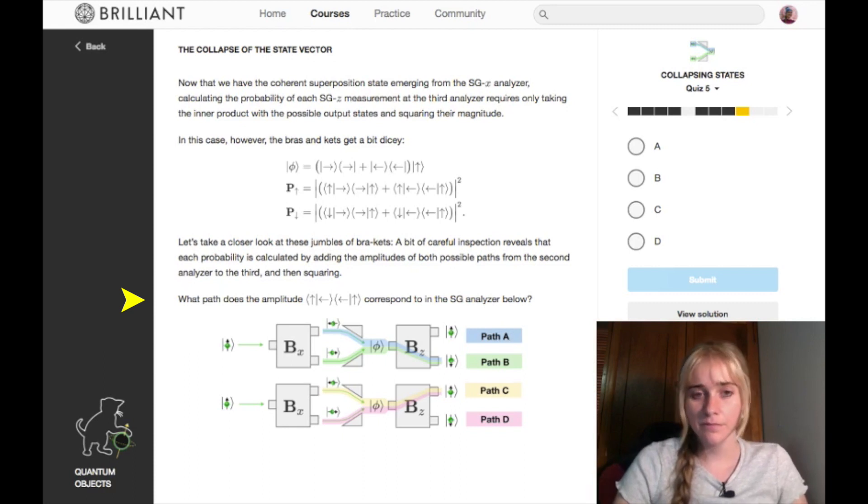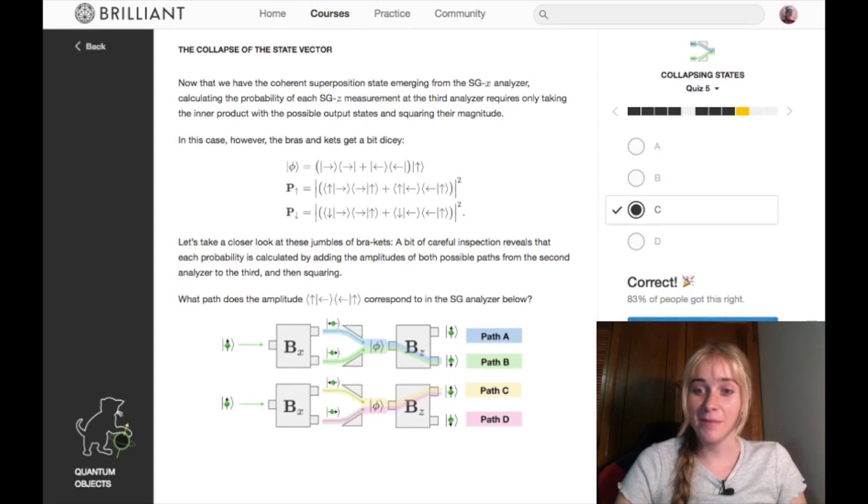Okay, so let's have a look at it. We've got a spin left projection in the middle here, so it must be yellow path C. Started spin up, projection to the left, and then an inner product with spin up. So I would say that is path C, and 83% of people agree with me.